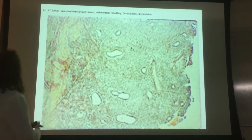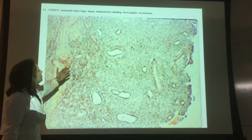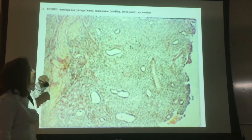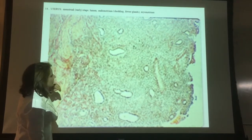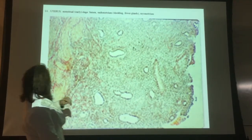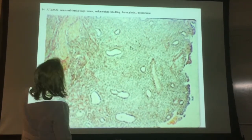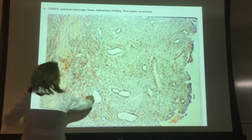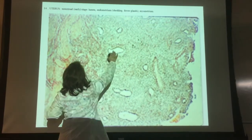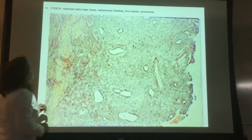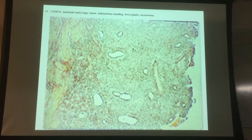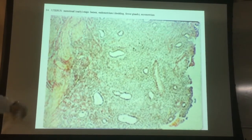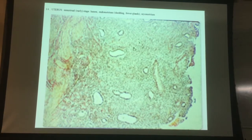This is the uterus in the menstrual stage. Obviously, you can see the blood here. There are fewer glands here and you're starting to see the blood in this stage. The lumen is all the way on the right-hand side.